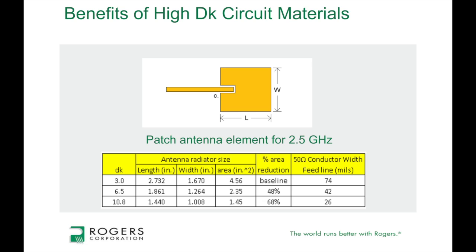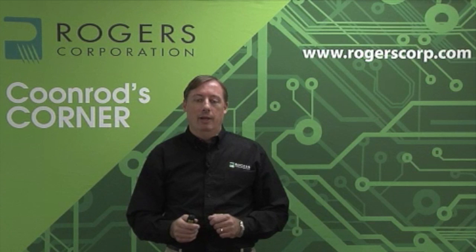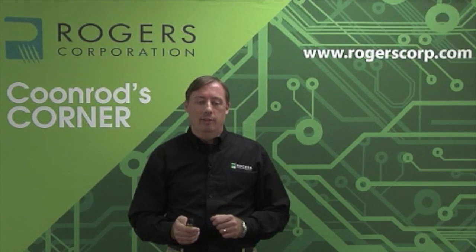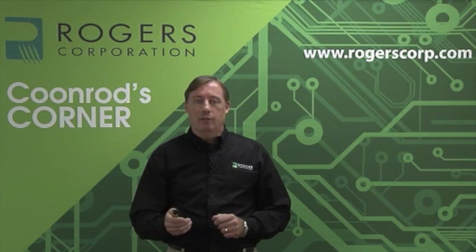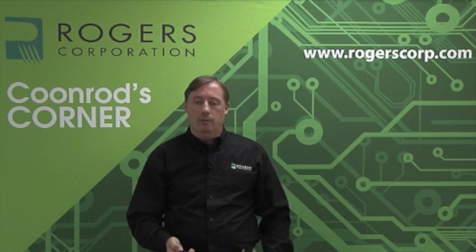One drawback to high dielectric constant materials is the feed line. The feed line is what feeds energy to the resonator, and it will have to get more narrow as you go to a higher dielectric constant. A more narrow feed line means more losses. So there are always trade-offs: yes, you get a smaller filter and a smaller antenna with high Dk materials, but the feed lines and transmission lines also get smaller, resulting in more losses.